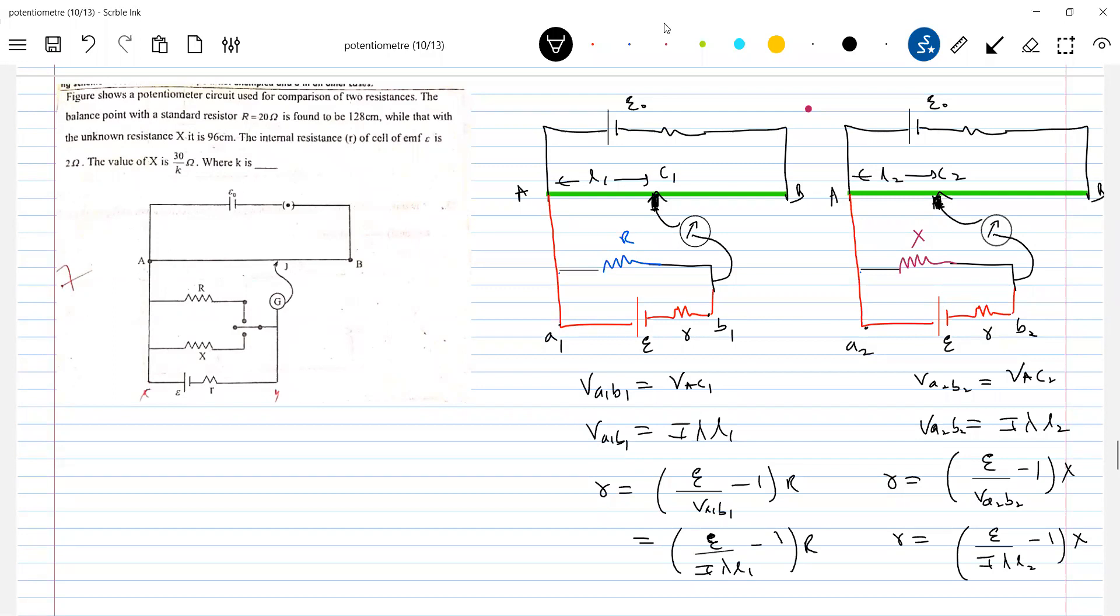So what is the value? This will be equal to I lambda L1 into R. Same, similar idea, no? But here, we have a lot of unknown things. Check it now. 30 by 7 Ohm.